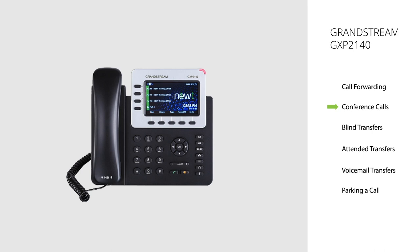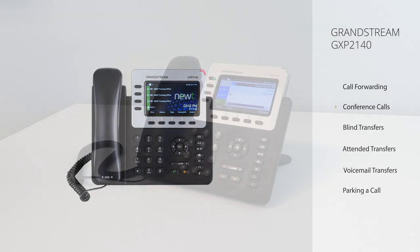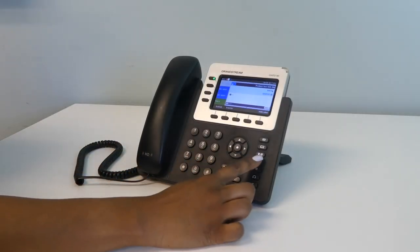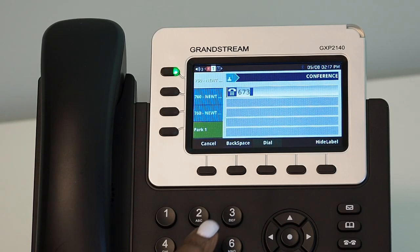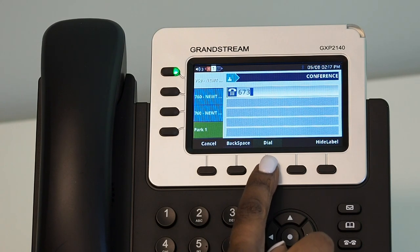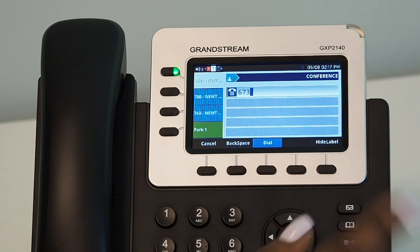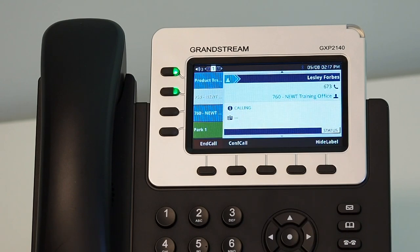Conference calls. This feature will allow you to add up to 5 additional callers to an active call. During an active call, press the Conference hard key button located on the right-hand side of the handset. This will put your active caller on hold and provide you with a dial tone. Dial the third party you wish to add to the call — internal extension number or a 10-digit telephone number — and press the Send hard key or the Dial soft key button to initiate the call.